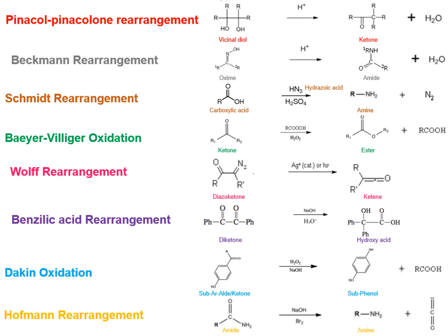Now let's compare all these rearrangements with respect to the catalyst used. Four rearrangements use acid as a catalyst: Pinacol-Pinacolone, Beckmann, Schmidt, and Baeyer-Villiger oxidation. Wolff rearrangement takes place in the presence of light, so essentially neutral conditions. Three rearrangements occur in the presence of base: Benzilic acid rearrangement, Dakin oxidation, and Hoffmann rearrangement all require alkaline conditions.